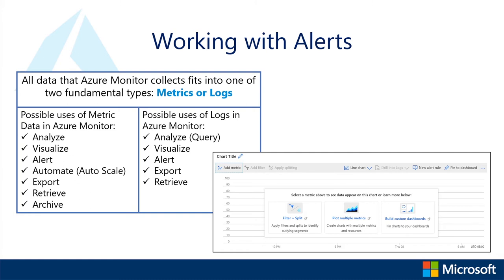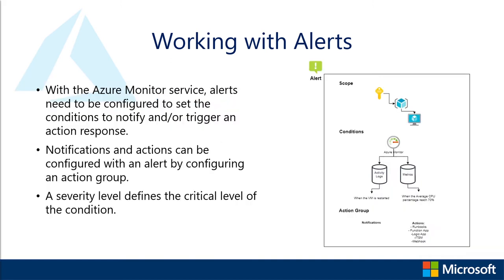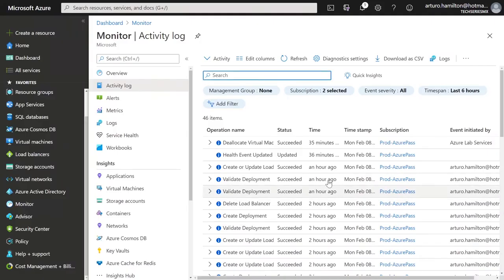When we work with alerts, as part of our service we need a scope, a condition, and an action. The scope is the object we are monitoring, the condition is the activity we're watching for, and the action will be the steps taken after the condition is met. Let's take a look — back to the portal, select the alerts.